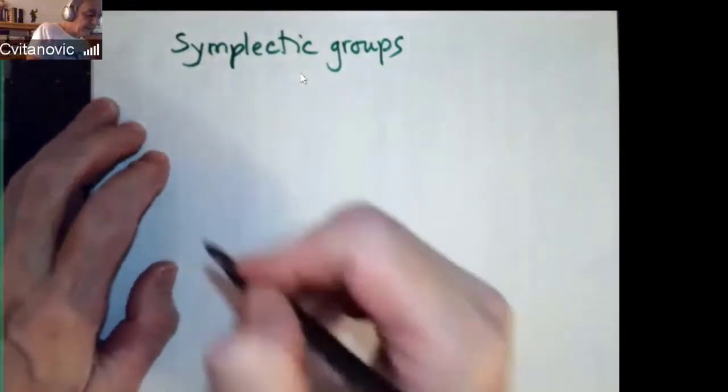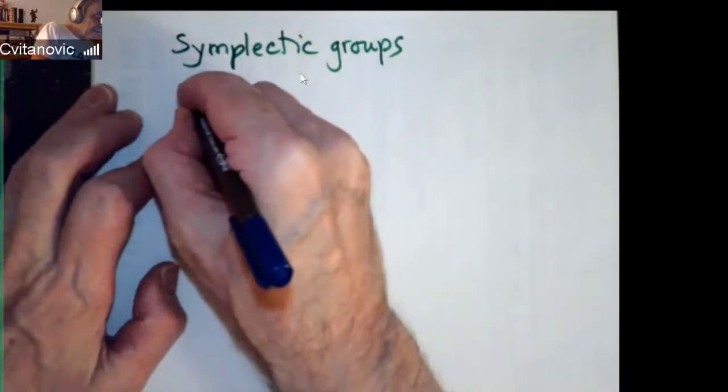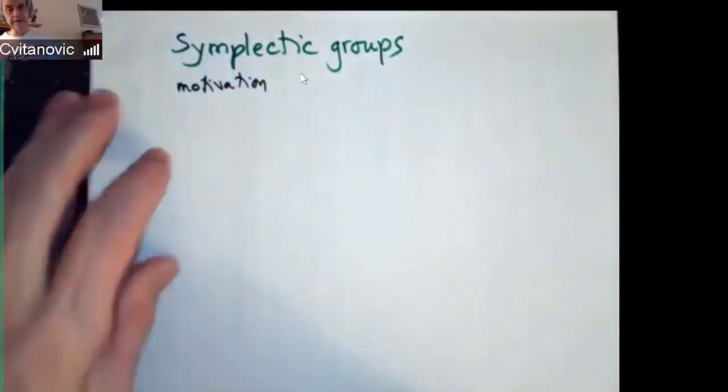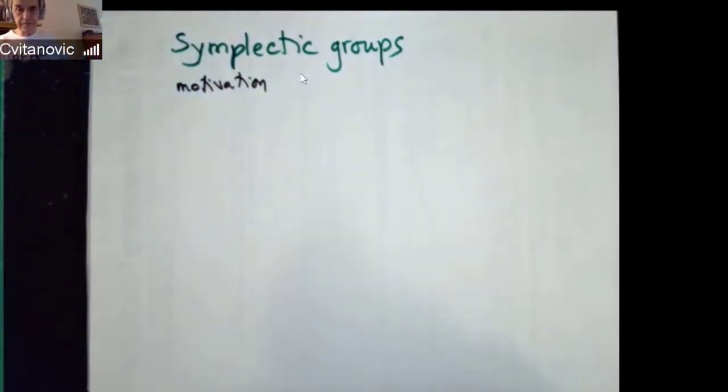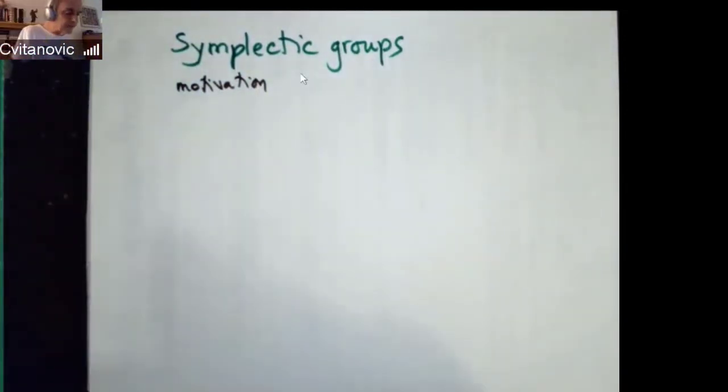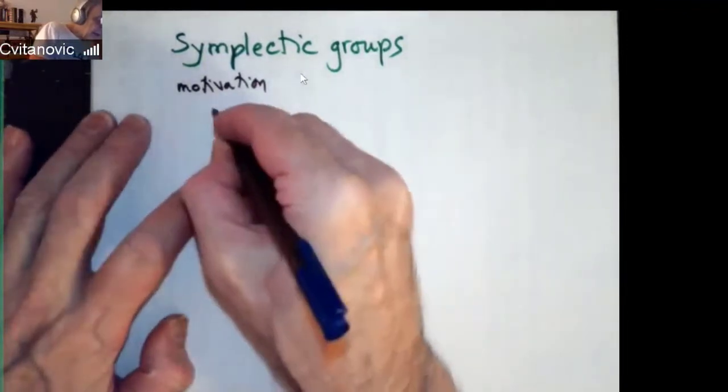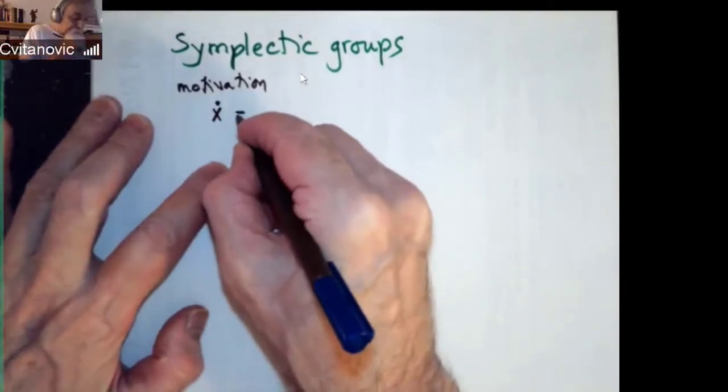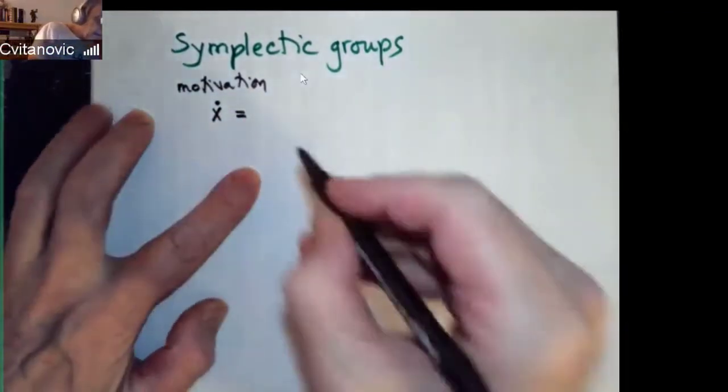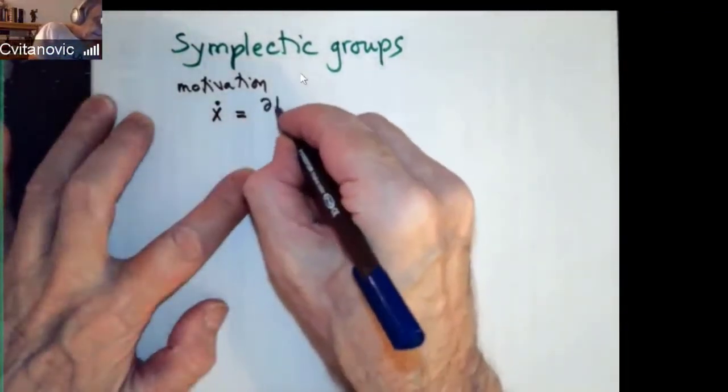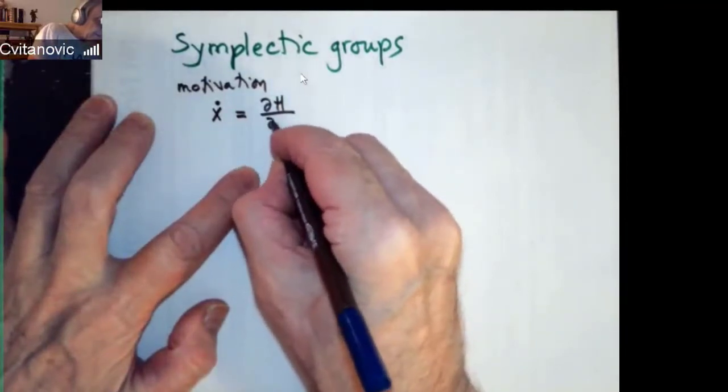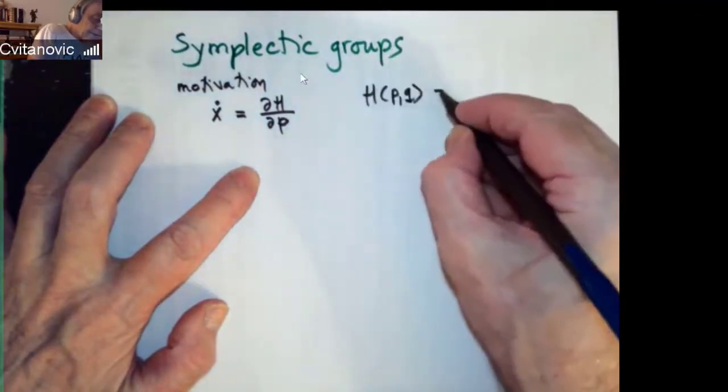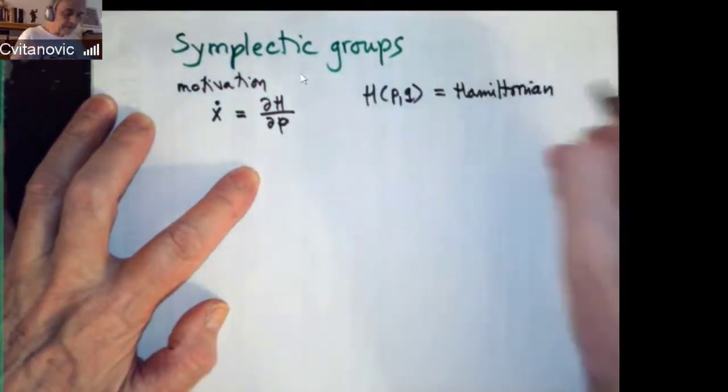And that comes from the reason why it belongs to this classical group: when people write Newton's equation as a first-order equation, they write X dot velocity is derivative of a Hamiltonian function. So this function is Hamilton's function that we often call Hamiltonian.